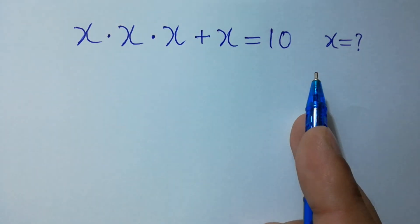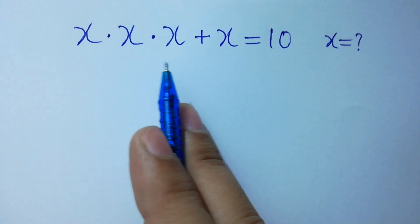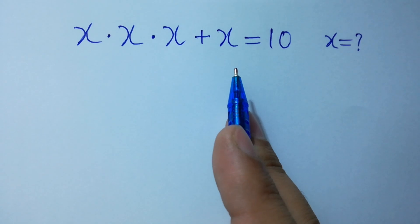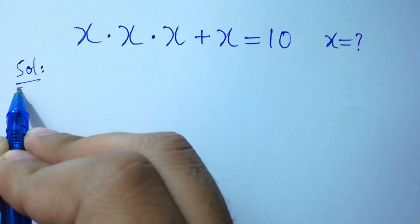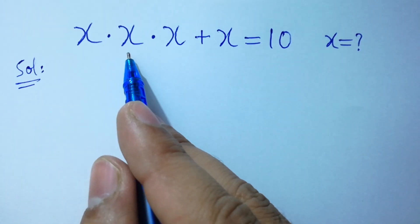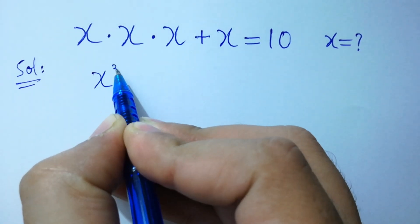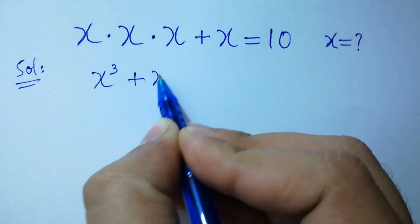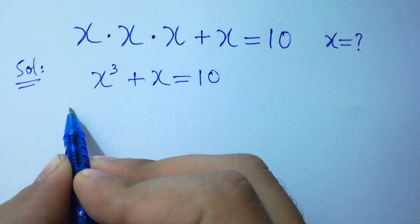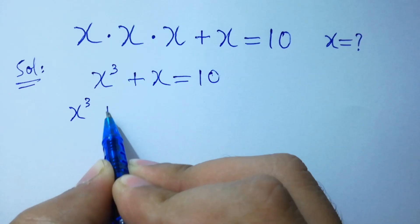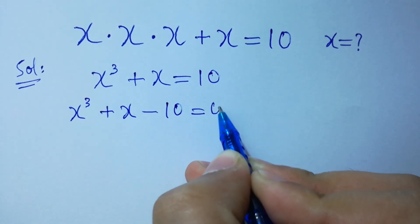Hello friends. Find the value of x if x times x times x plus x is equal to 10. Let's solve it. x times x times x is x cubed, so we have x cubed plus x equals 10, which gives us x cubed plus x minus 10 equals 0.